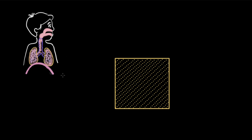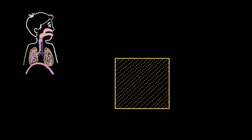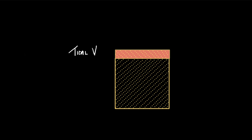Let's say this is Ravi's lungs. Ravi is doing normal breathing — when he inhales, some air gets in, and when he exhales, the same amount goes out. This volume of air that comes in and goes out with each breath is called tidal volume (TV), and it is around 500 ml. A normal person breathes around 12 to 16 times per minute, so the total air entering the lungs per minute is around 6,000 to 8,000 ml — about six to eight liters per minute.